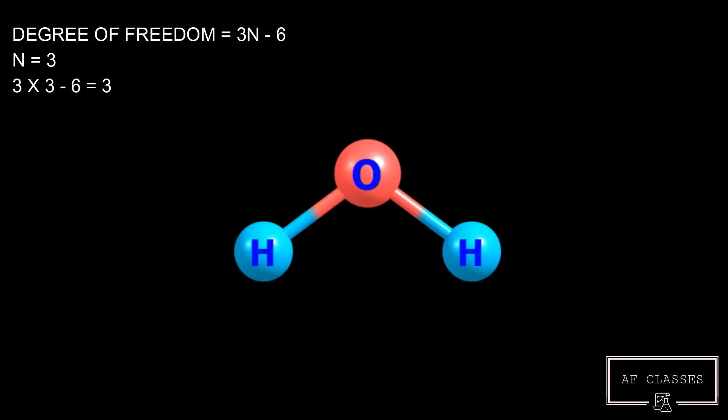In the case of water molecule, there are three atoms: one oxygen and two hydrogen atoms, so N is equal to 3. By putting N equals 3 in the 3N minus 6 equation, we get degree of freedom is equal to 3.